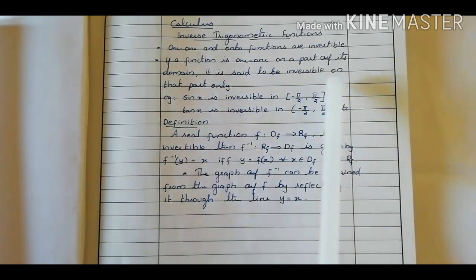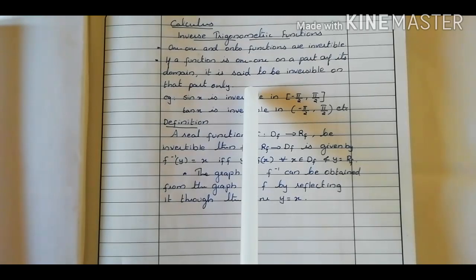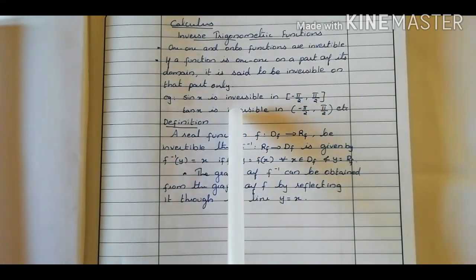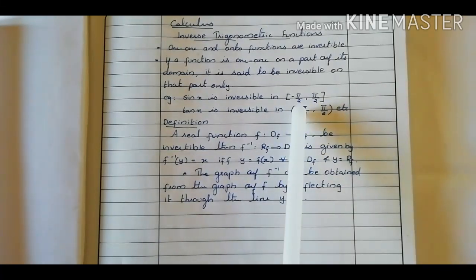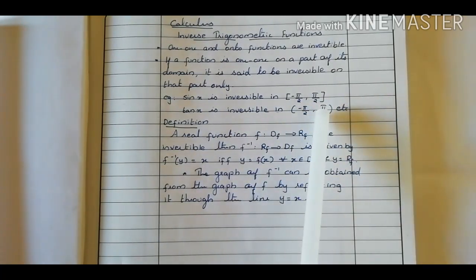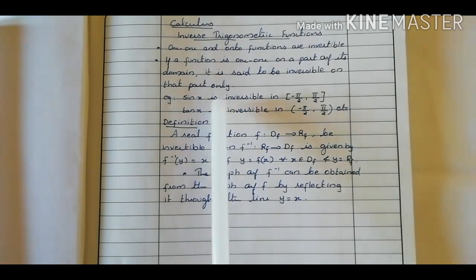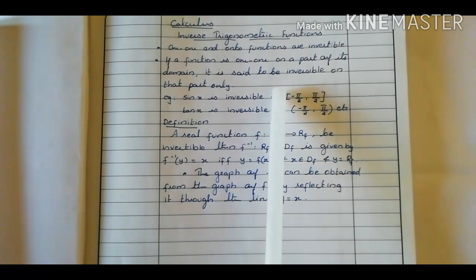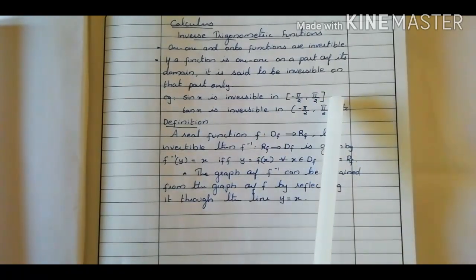So for all trigonometry functions, we know that each trigonometry function is invertible for some part only. For example, sin x is invertible in the closed interval minus pi by 2 to pi by 2. Again, sin x is also invertible in the closed interval pi by 2 to 3 pi by 2. So you can take some intervals only — for that interval, that trigonometry function is invertible.